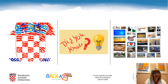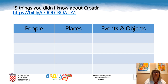Before watching the video '15 things you didn't know about Croatia', I'd like you to draw this chart or table into your notebooks. Please make sure to have three columns with the following categories: People, Places, and Events and Objects. After drawing the chart, please copy the link bit.ly/coolcroatia1 into your browser and watch the video. While watching, fill in the chart with the correct pieces of information. Have in mind that you can stop the video anytime.